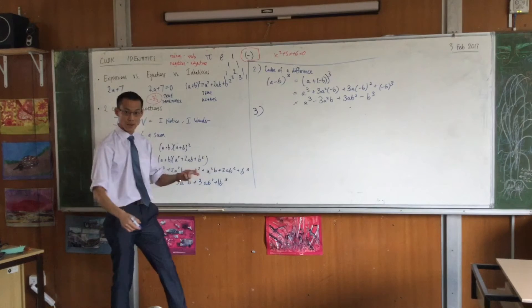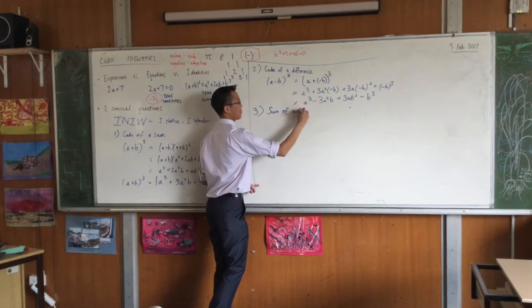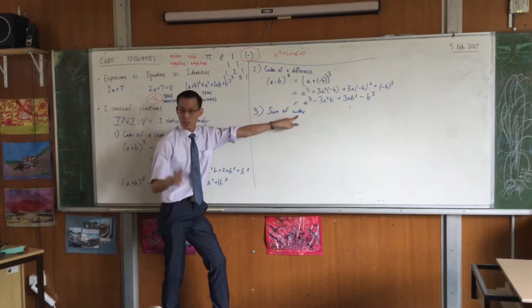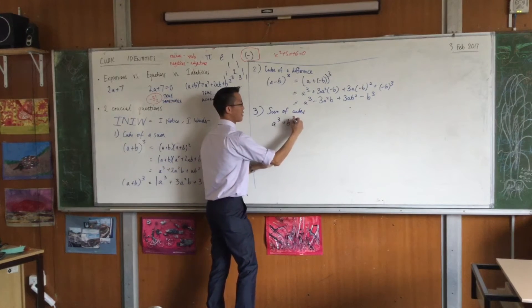So instead of the cube of a sum, I'm going to do the sum of cubes. Think about what the words mean. This means you've got two cubes and you're adding them together. So here is the sum of cubes.